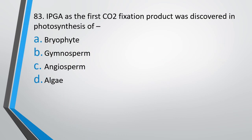Question number 83. 3PGA as the first carbon dioxide fixation product was discovered in photosynthesis of? Option A, bryophytes. Option B, gymnosperms. Option C, angiosperms or Option D, algae. Correct answer is Option D, that is algae.